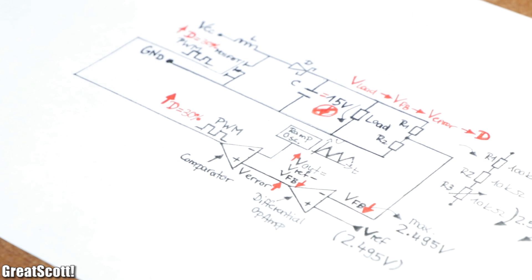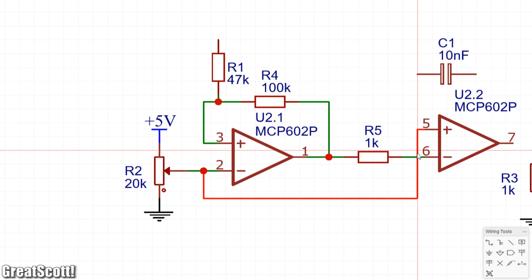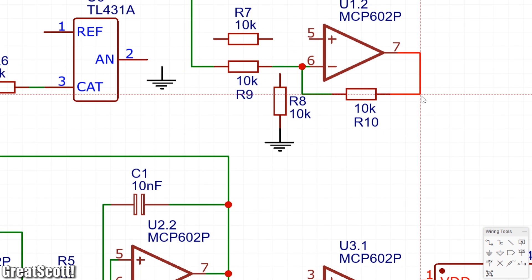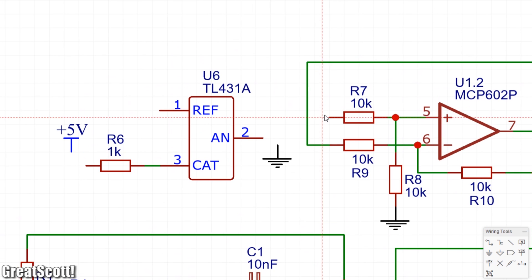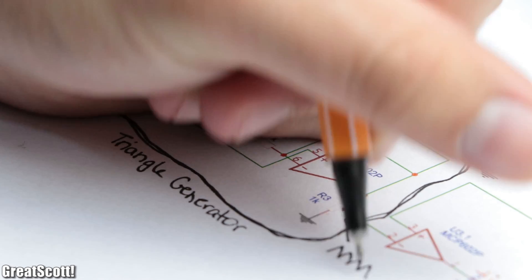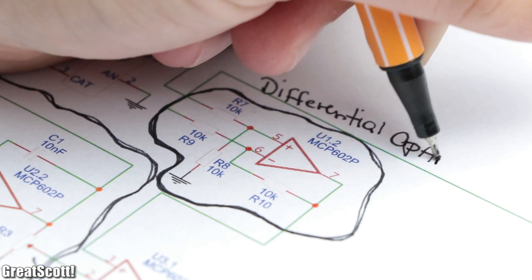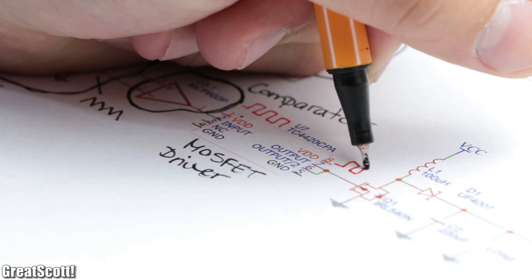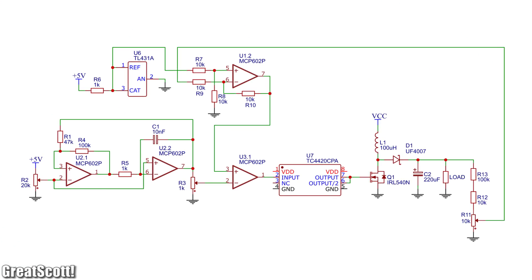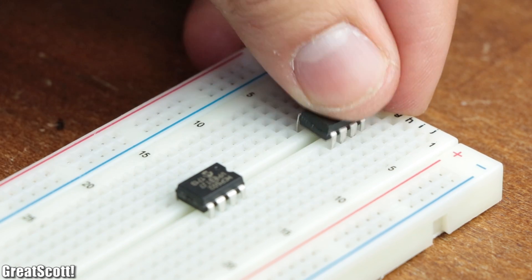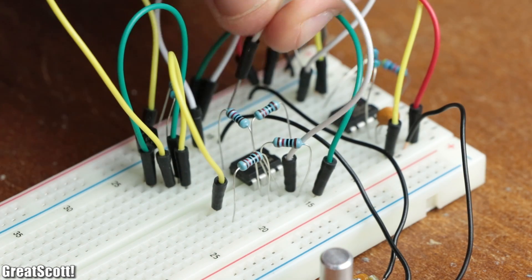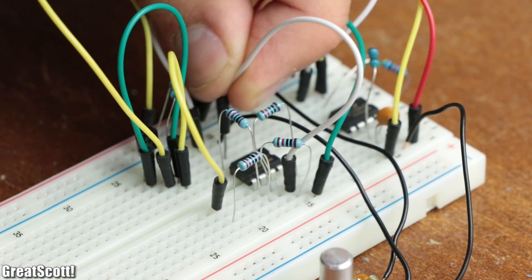And with this design guideline in mind, I created an appropriate schematic mainly consisting of two rail-to-rail op-amps and a TC4420 MOSFET driver, which together form a triangle generator, a differential op-amp configuration, and a comparator which controls the MOSFET driver and thus the MOSFET. And once the schematic was complete, I began connecting all the components to one another according to the schematic on a breadboard, which due to the rather big number of necessary components took quite a while.